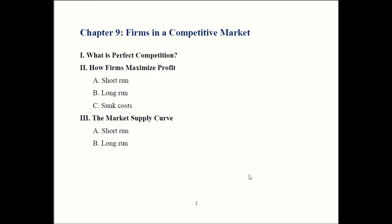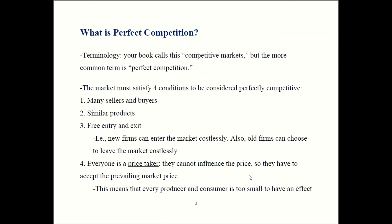So with that intro out of the way, let's look at what perfect competition is. There are four conditions. First, you have to have a lot of buyers and also a lot of sellers — the book only mentions lots of sellers, but you also need lots of buyers. Second, each firm has to offer similar if not identical products. We'll see later that if products are different, you get monopolistic competition, which gives somewhat different results.